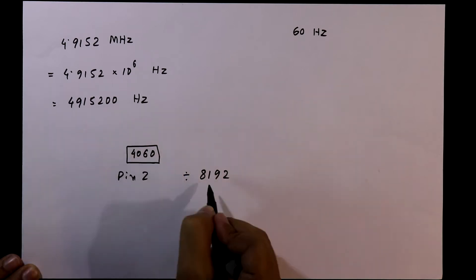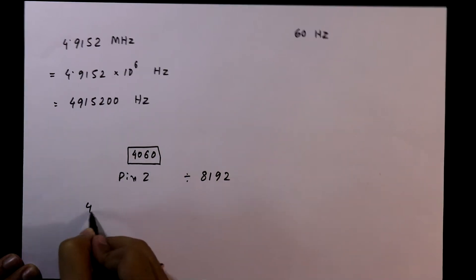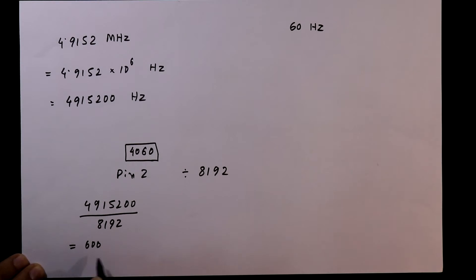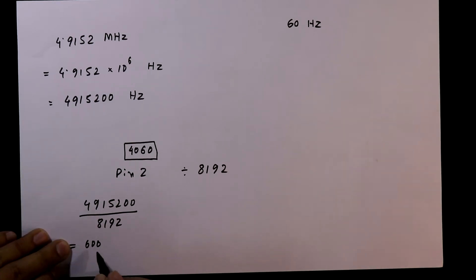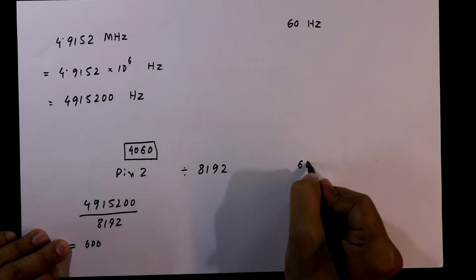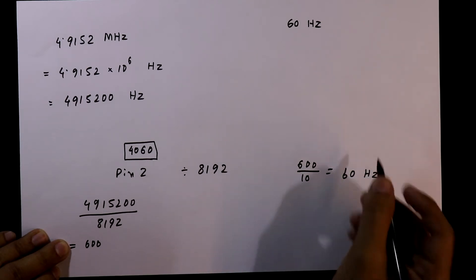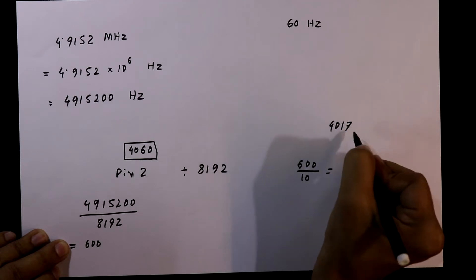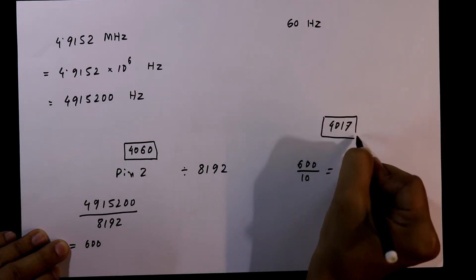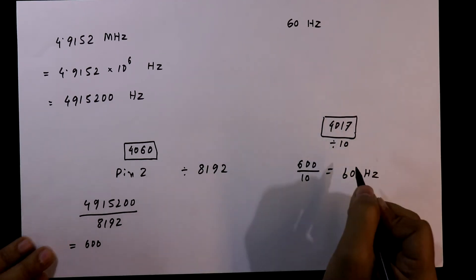So if we divide this number by 8192 then we get 600. Now if we divide this 600 by 10, we will get 60 Hertz. And we know that 4017 is a decade counter IC that divides by 10, so this is the basic calculation for this circuit.